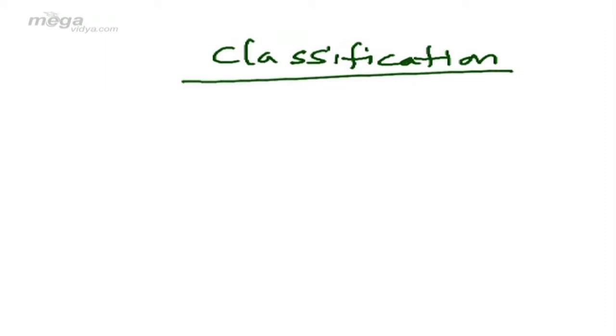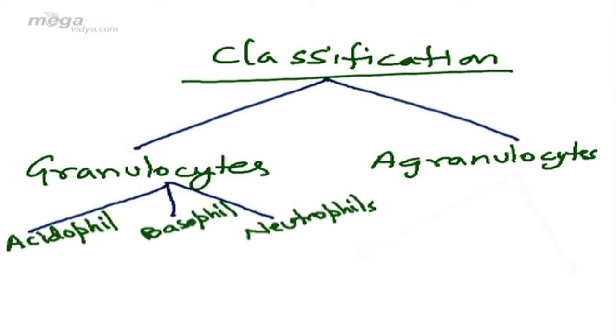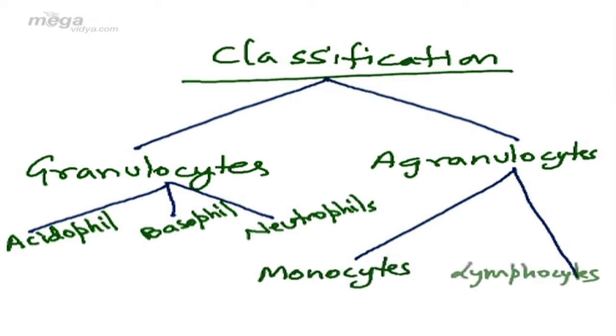Coming to classification of WBCs. We can classify WBCs into two types: granulocytes and agranulocytes. The granulocytes are further of three types: acidophils, basophils, and neutrophils. Agranulocytes are of two types: monocytes and lymphocytes. We will now discuss these different types of WBCs one by one.